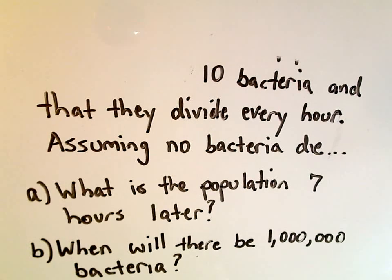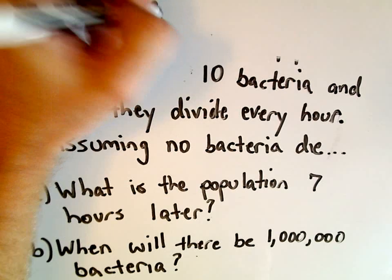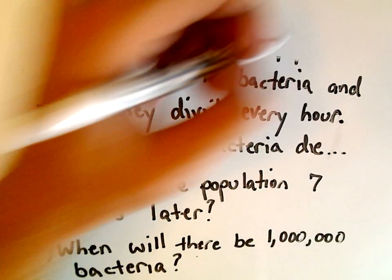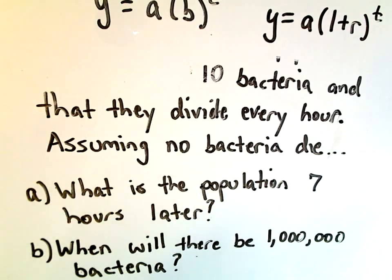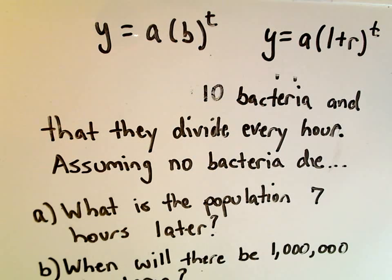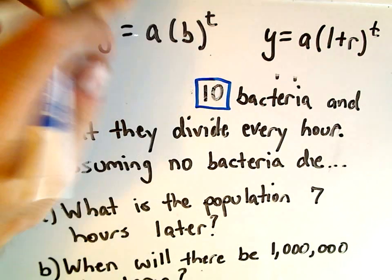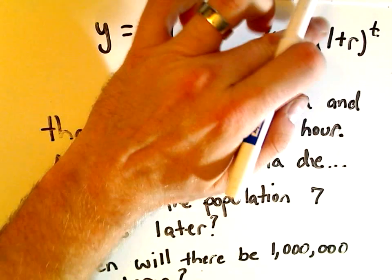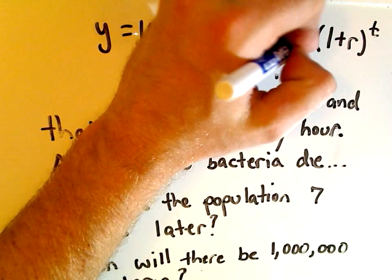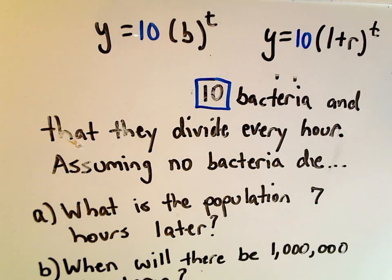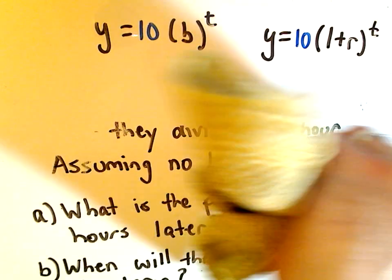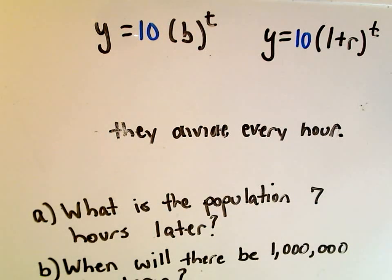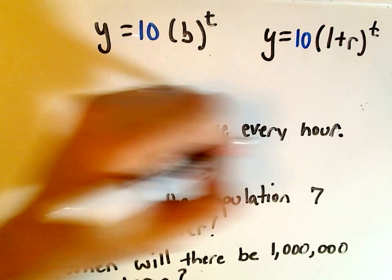So again for our equation we have y equals a times b to the t, or again we can write it as y equals a times 1 plus r raised to the t. So our initial population here is going to be 10 bacteria, so that's what I'm going to plug in for the a in my formulas. And again these are going to be equivalent, I just want to talk about a couple distinctions. So we've got 10 bacteria. We've used that bit of information and it says they divide every hour. We'll remember that none of these bacteria die away, so they divide every hour.